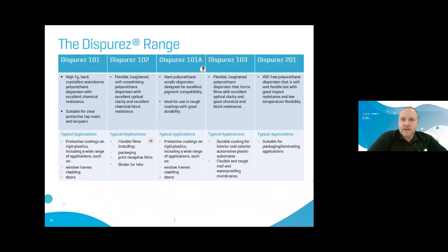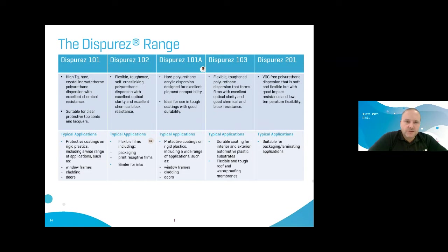Here is an overview of the DisPres range, starting with DisPres 101. This is a high-Tg PUD — a hard crystalline dispersion with excellent chemical resistance, suitable for clear protective top coats and lacquers. Typical applications include protective coatings for rigid plastics and window frames.